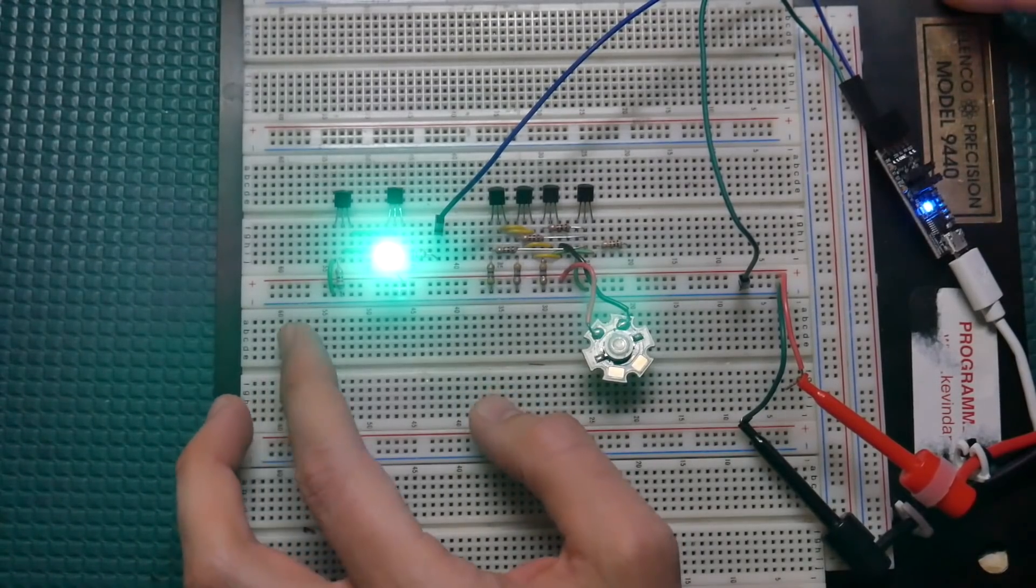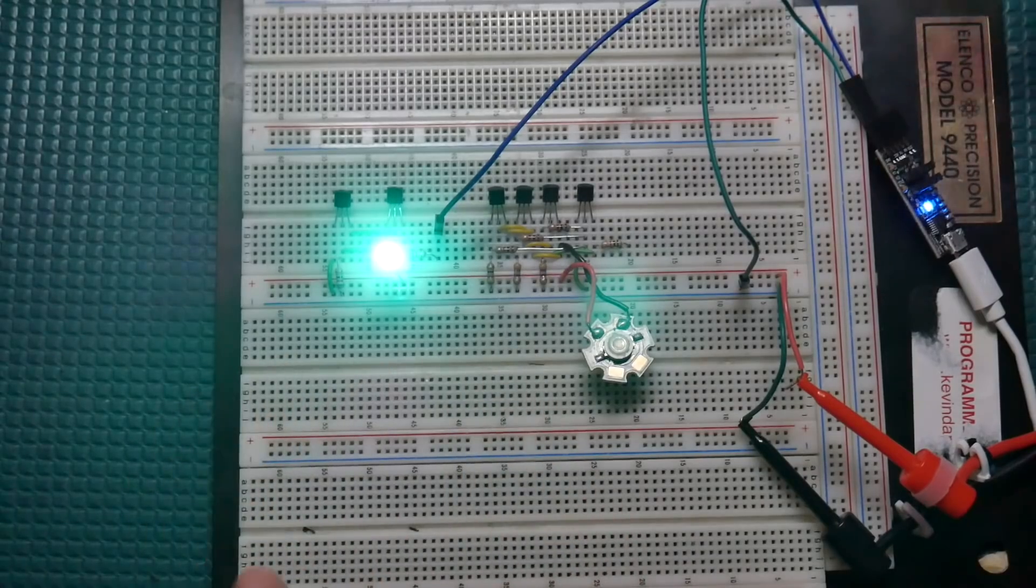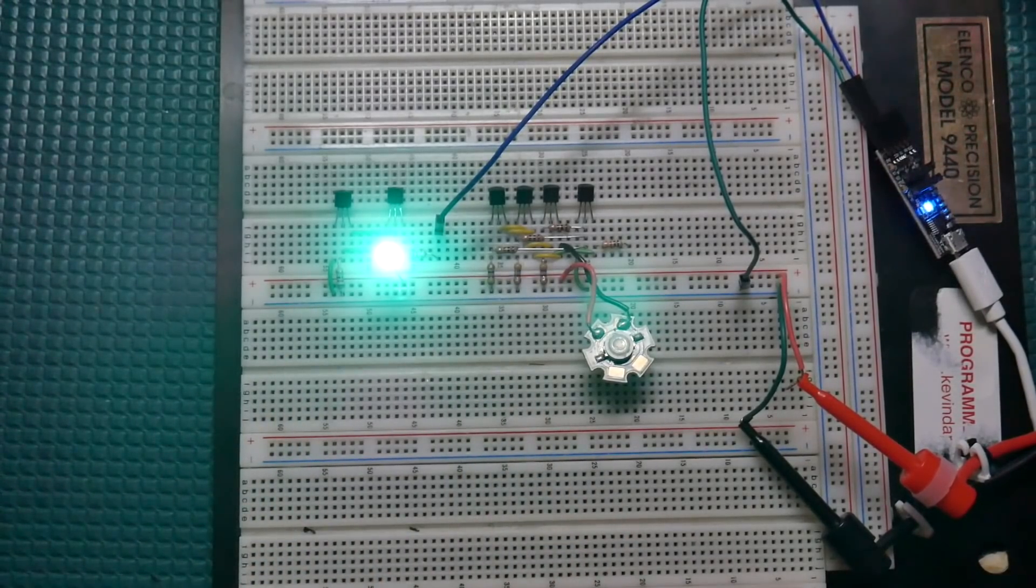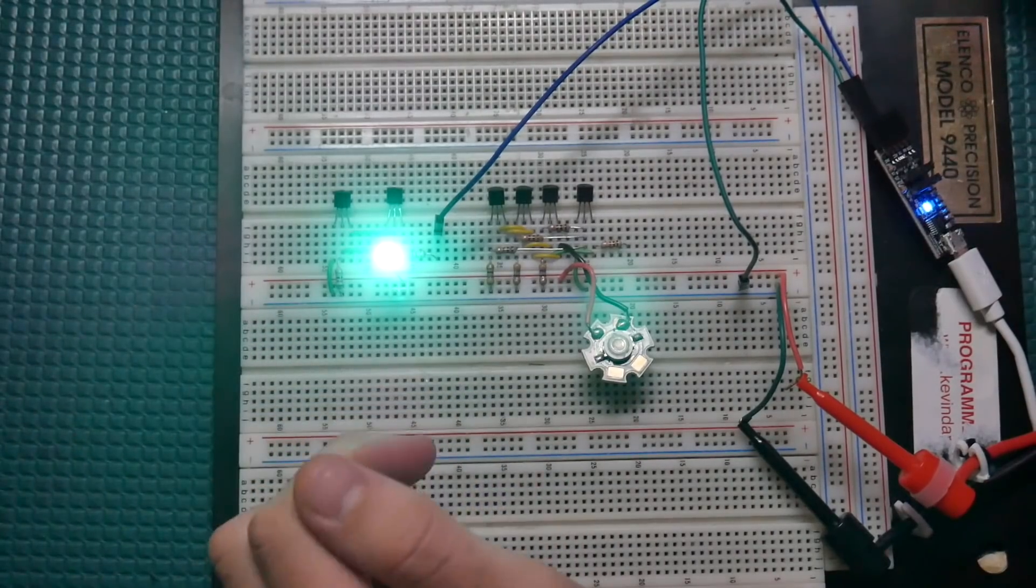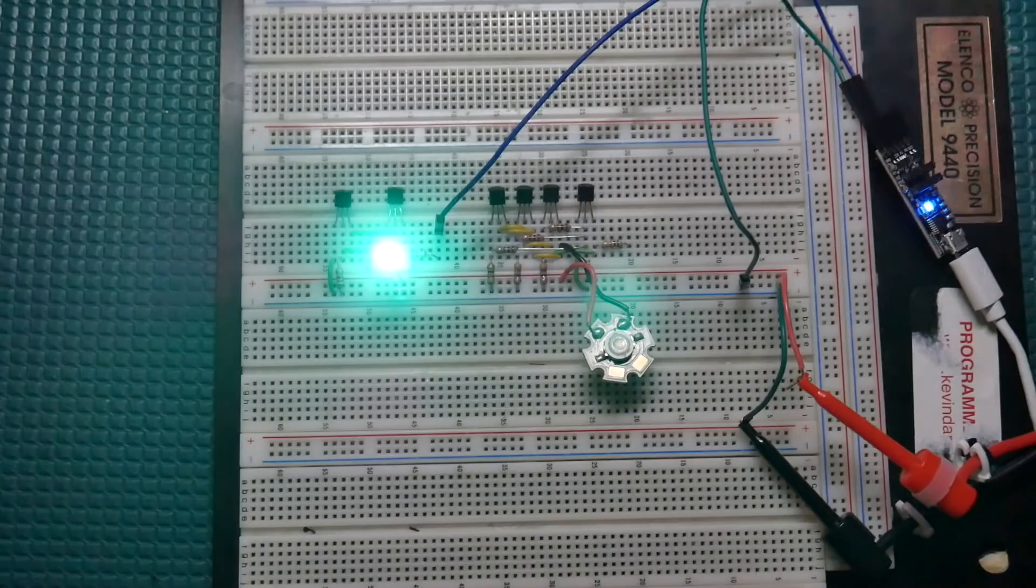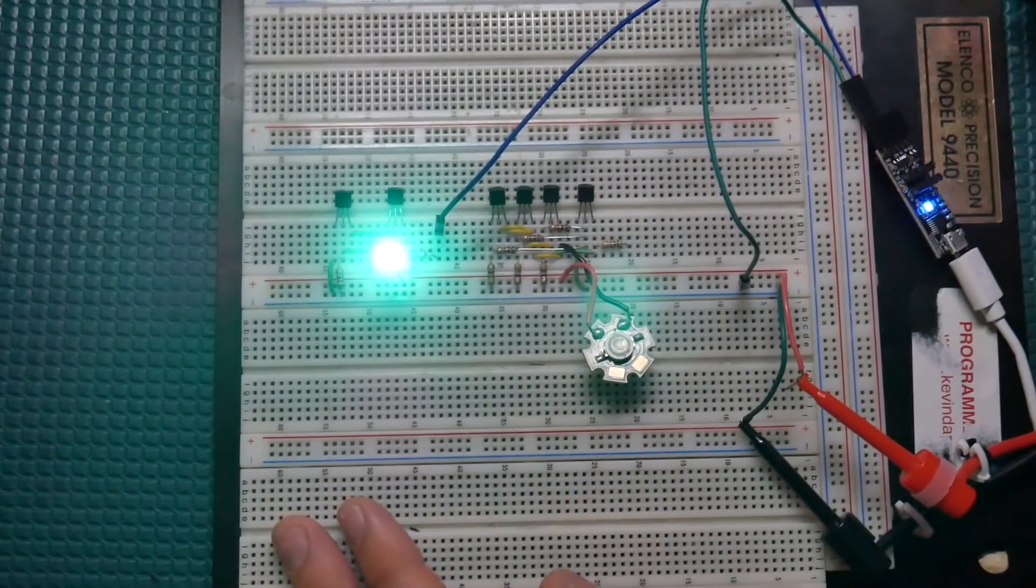In this video I'm going to show you a constant current regulator circuit that I've used many times. The best part about this one is that you could probably build this today because it uses just standard components: NPN transistors, resistors, and that's about it. So no op amps, no shunt regulators, nothing fancy going on here.